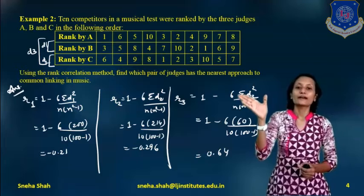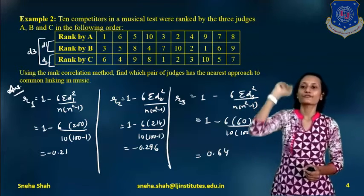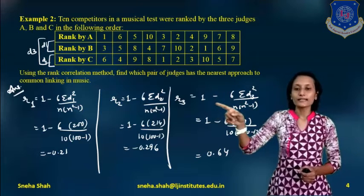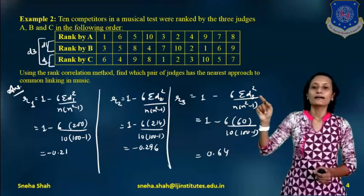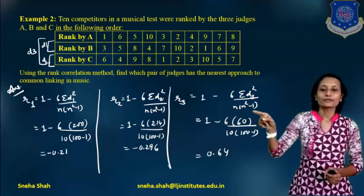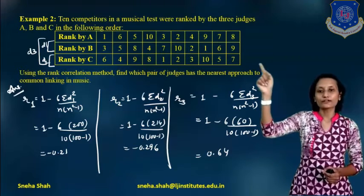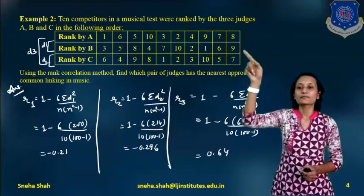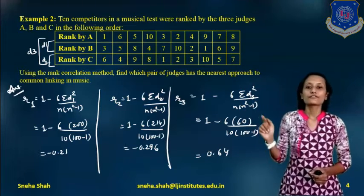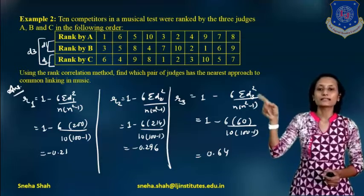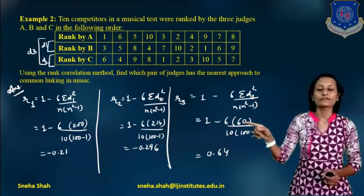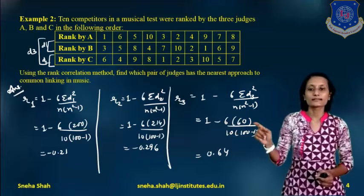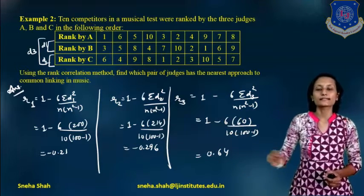Next, we find the rank correlation between A and C using D3. R3 equals 1 minus 6 sigma D3-squared divided by n into n-squared minus 1, where n equals 10. D3 is the difference between ranks given by A and C. The summation of D3-squared equals 60. After substituting and solving, the answer is R3 equals 0.64.